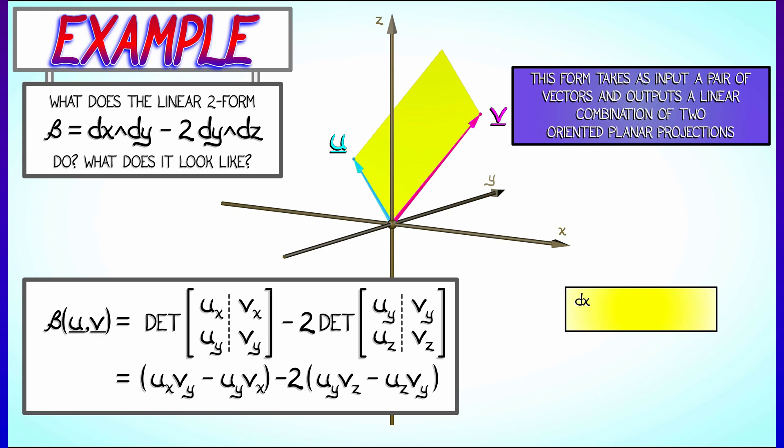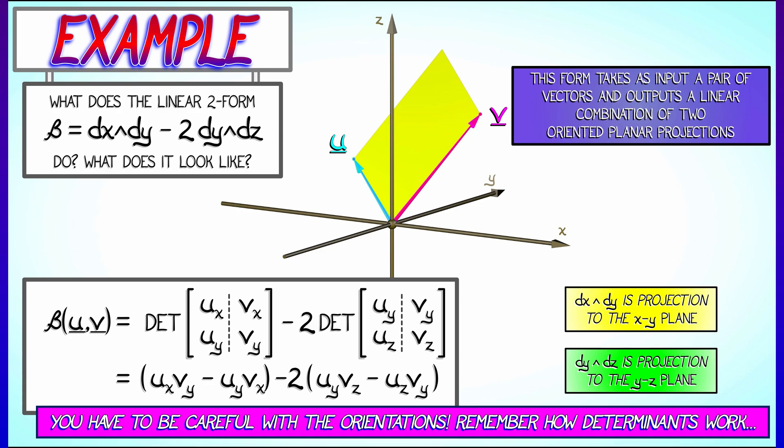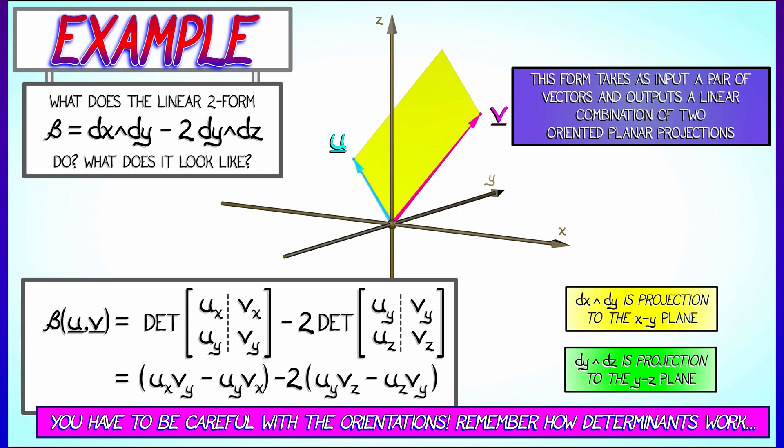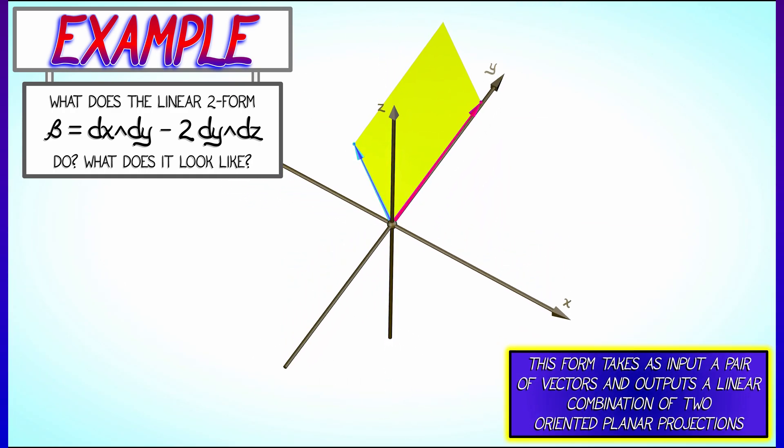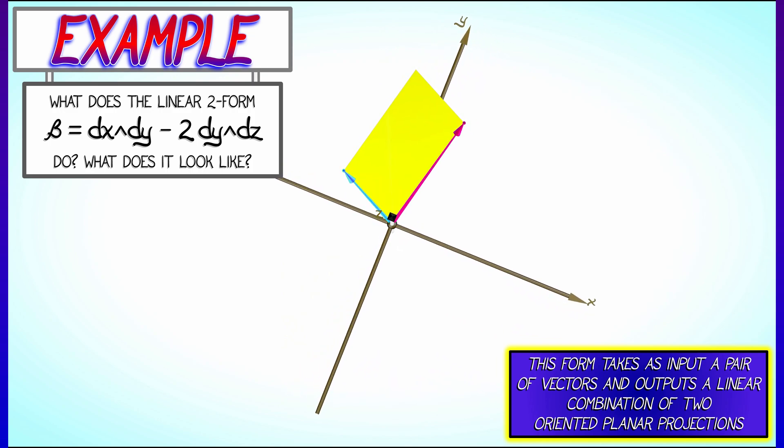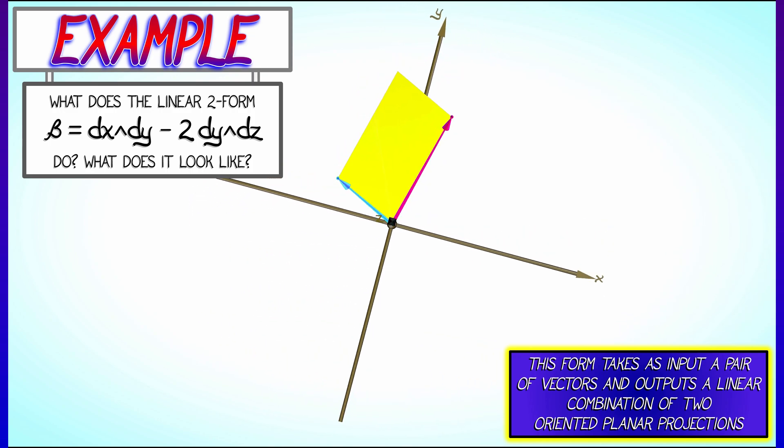Now, that makes sense, but it's not really so geometric. Geometrically, dx wedge dy is projection to the xy plane, and dy wedge dz is projection to the yz plane. So the way you can think about this, if you're careful with your orientations and your plus and minus signs, is that you take those two vectors, u and v, and then you project it to the xy plane. Take the area of that.